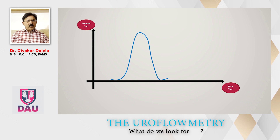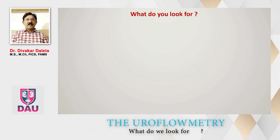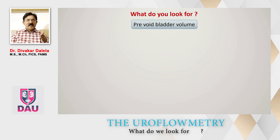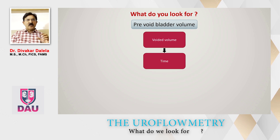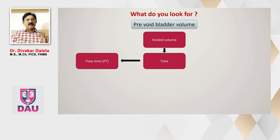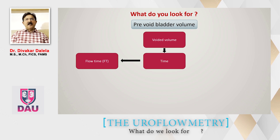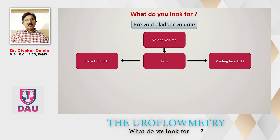What do we intend to see in this test? This test is done in various parts. The first part is you check what is the pre-void bladder volume by bladder scan or bladder ultrasound — you assess how much volume is in the urinary bladder. When you think the bladder is adequately filled, you give a go ahead. Then when the patient passes urine, we want to see how much is the volume voided in the machine and how much time has been taken by the patient to do this voiding. When we say time, one is called flow time and the other is called voiding time — I explained to you the difference between flow time and voiding time.